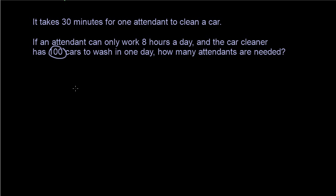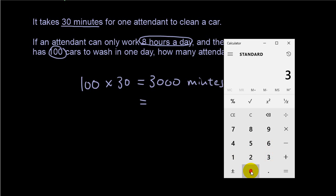So, you got 100 cars, it takes 30 minutes to clean each of them, so times 30 would be 3,000 minutes to clean all the cars. So, the attendants can only work 8 hours a day. Actually, let's just convert this to hours. So, 3,000 minutes to wash all the cars, divide that by 60, so 3,000 divided by 60 is 50 hours.